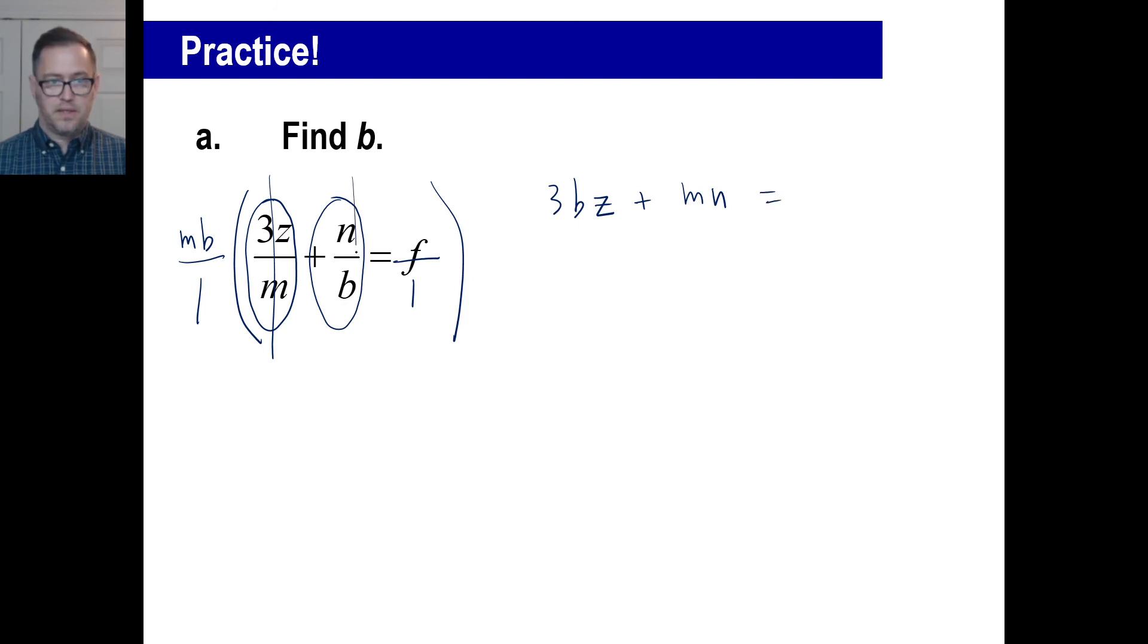Third one, nothing cancels. So, we have, you know, MBF. And we're solving for what? B? Okay. So, let's get this baby over here and let's get this MN over there. Alright. So, we have 3BZ minus MBF equals negative MN or POP.